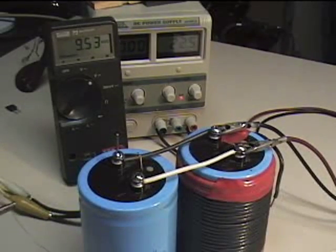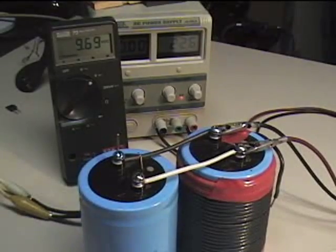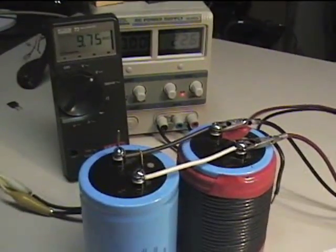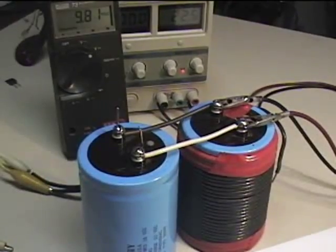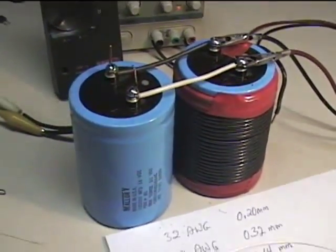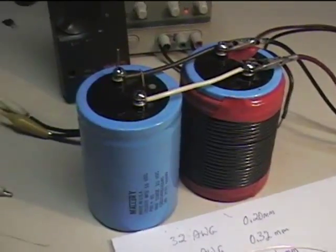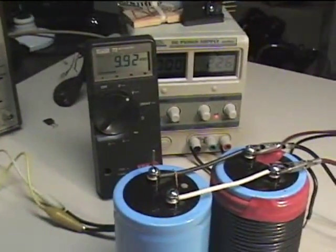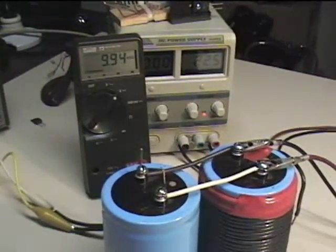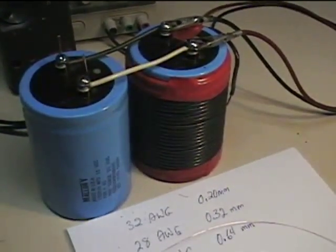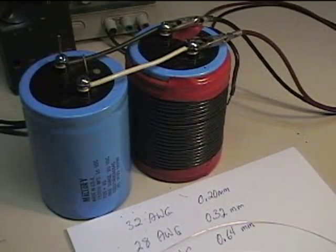This is a 32 gauge, 0.2 millimeter wire. With a cap charged at 20 volts, 300,000 microfarad, so 0.3 of a farad, and I still have 9.91 volts DC in the cap.